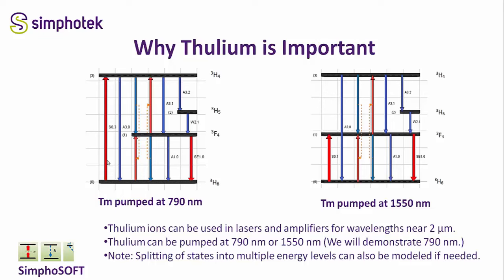You can pump at 790 nanometers and get lasing from state 1. Another way of using thulium is to pump at 1550 nanometers from state 0 to state 1, and then get lasing from state 1 back to the ground state.